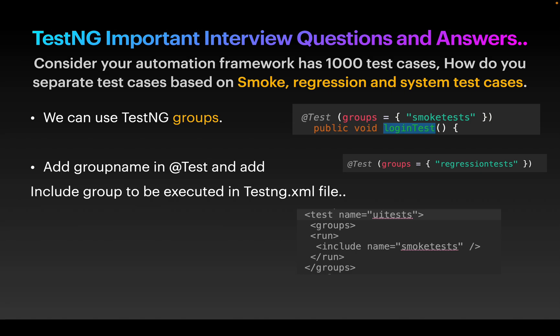The first question is: consider your automation framework has around 1000 test cases — how do you separate these test cases based on smoke, regression, and system test cases? In this scenario we have to use TestNG groups, where we name all our tests with group names. Whatever test cases you feel are smoke tests, name them with groups equal to smoke. For regression, give it a group name like regression. During test execution, we need to add the group name in the TestNG XML file inside the groups tag using the include tag.